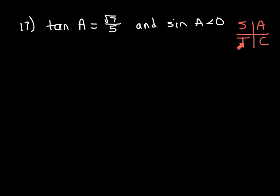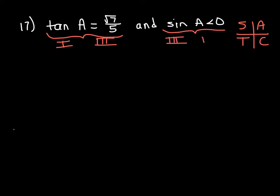Tan is positive in the third quadrant; sine and cosine are not. C means cosine is the only one positive in the fourth quadrant. Since tan is positive, we could be in quadrant 1 or 3. Since sine is less than zero — sine is negative — that means we're in quadrant 3 or 4. The only quadrant satisfying both conditions is quadrant 3.